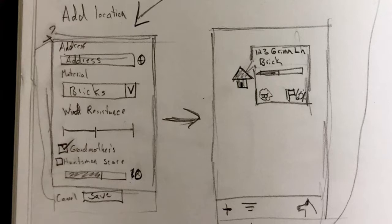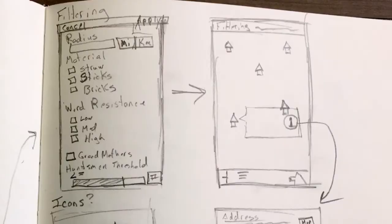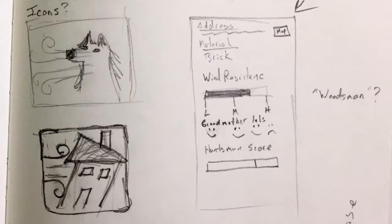Once you add a house, there's a house on the map. I have a little doodle of a popover and the tab bar at the bottom. Another feature I thought would be useful was filtering your map, like most other mapping apps. So you can narrow down the radius, which housing materials you want to see, wind resistance — all of those data points that the wolf would have added about the location. Once they apply the filter, they move to a filtered map view.